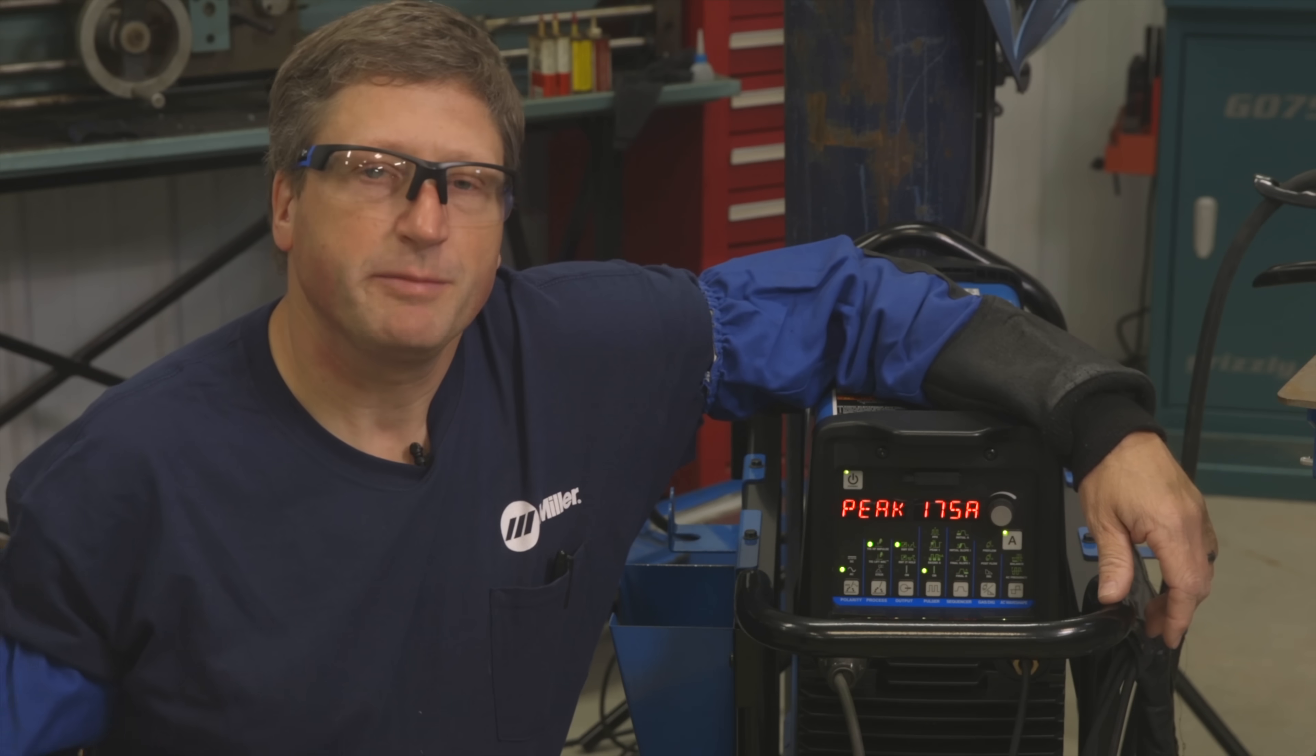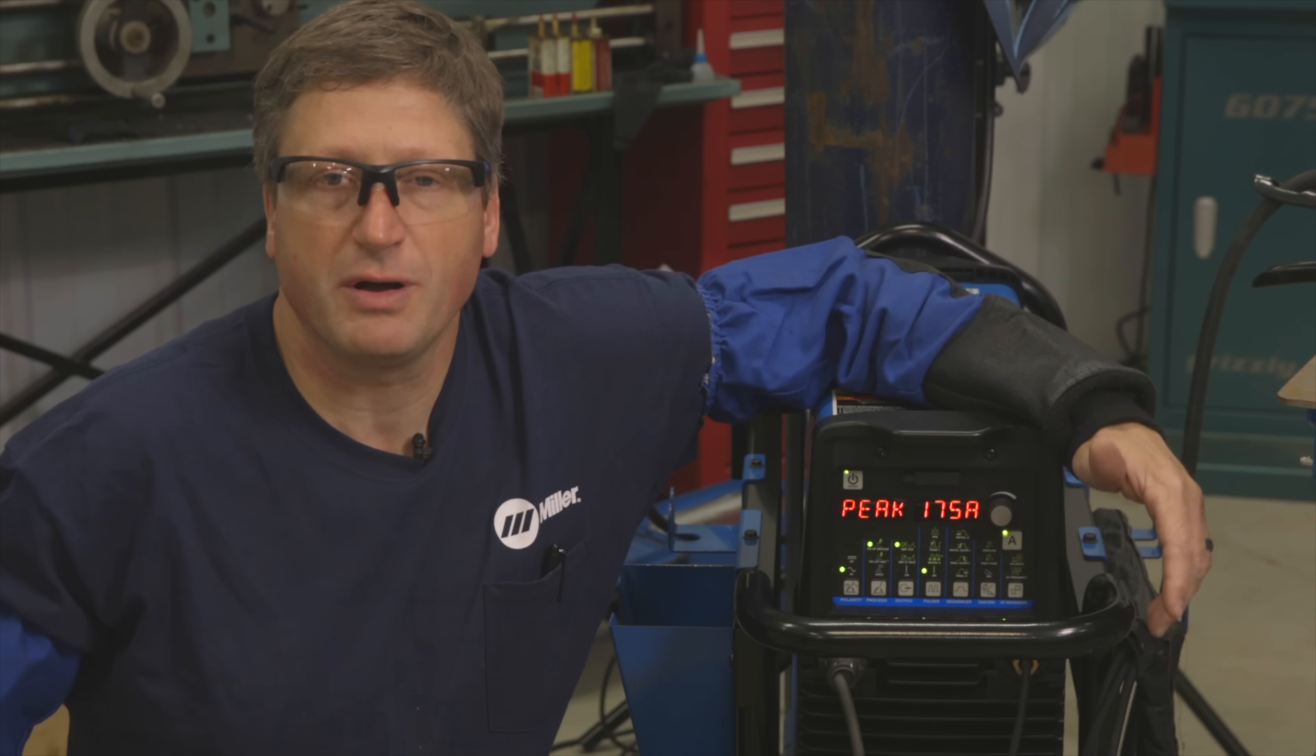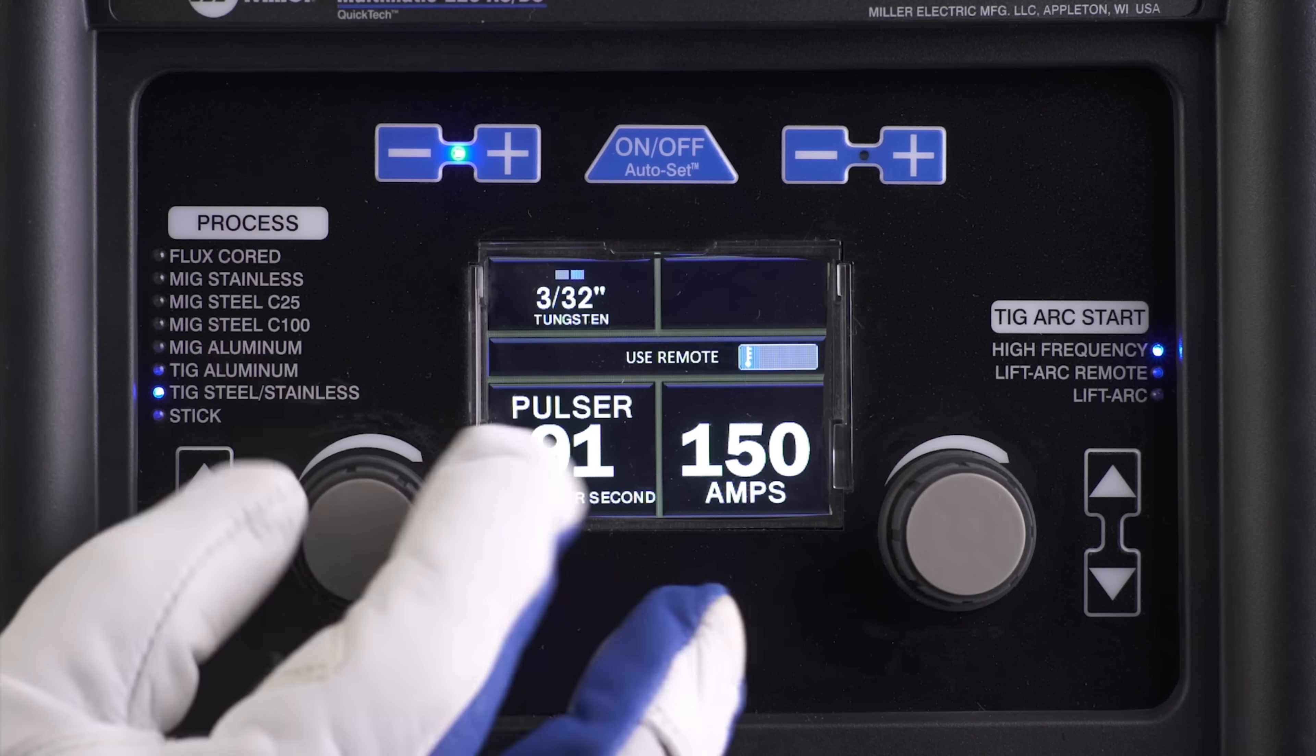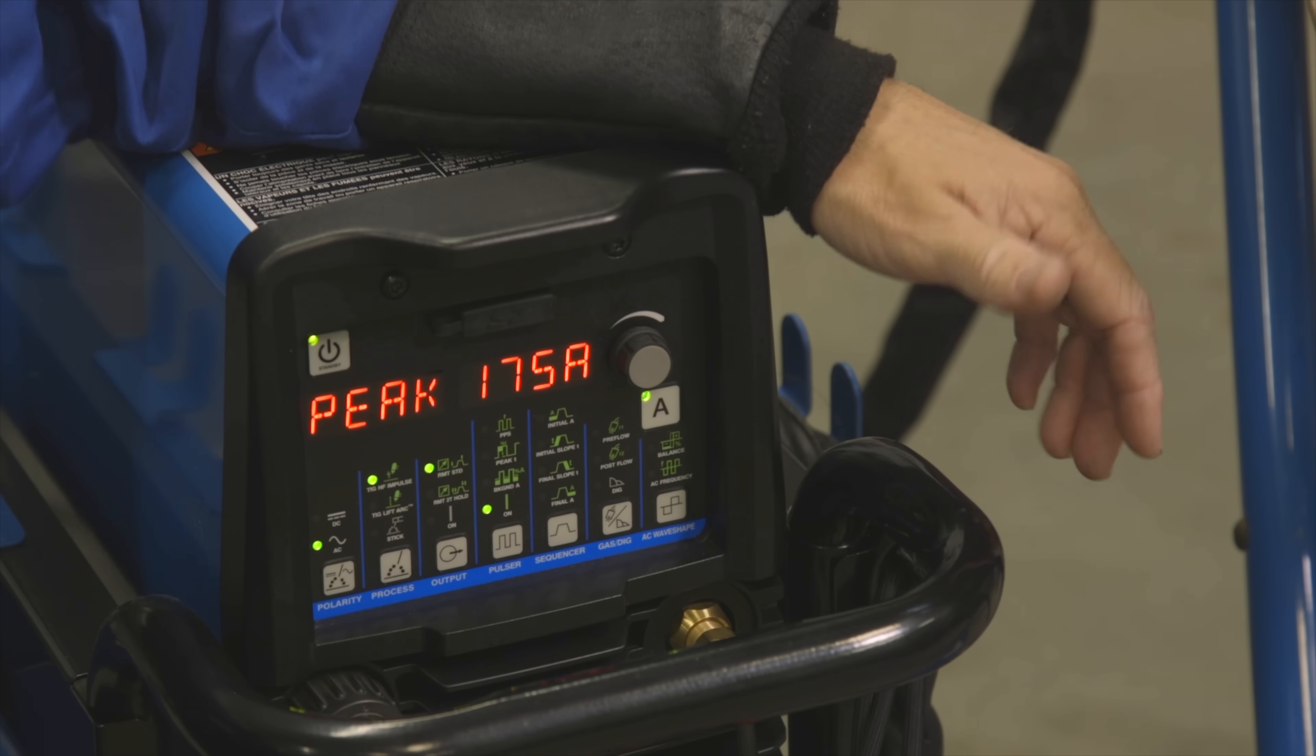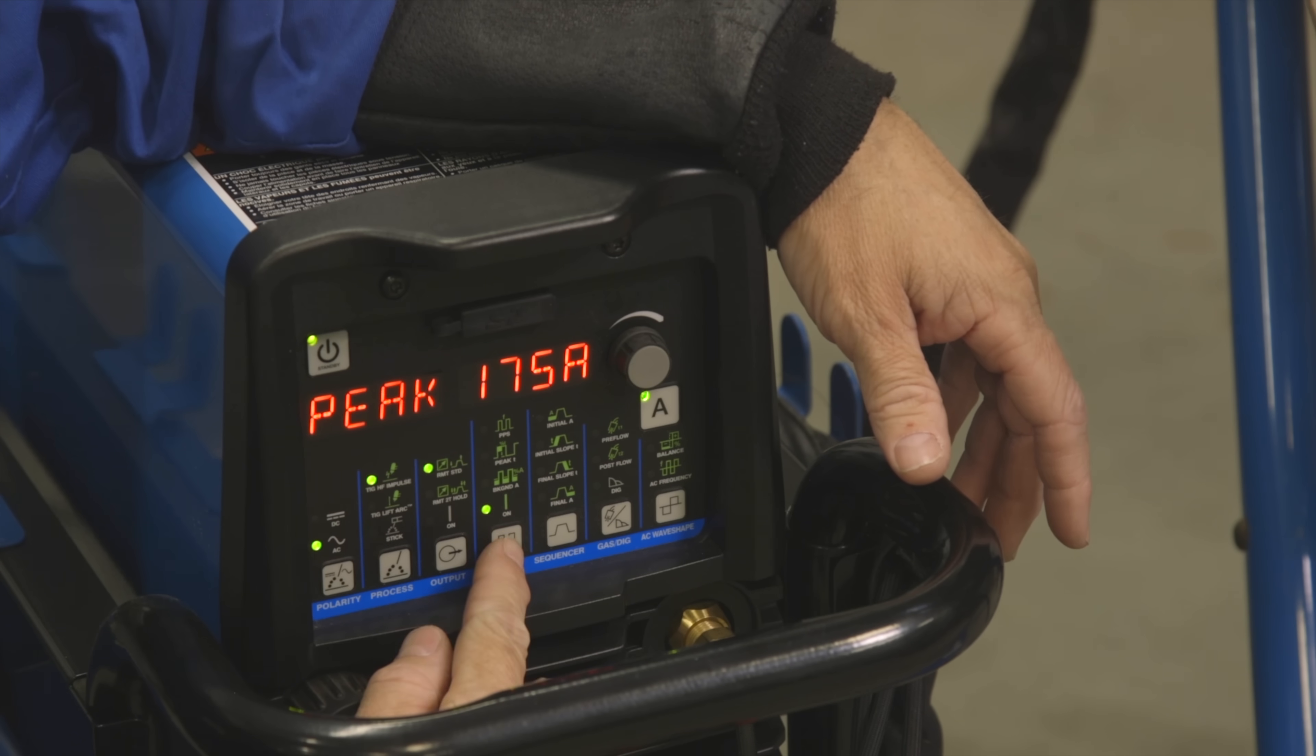For this exercise I'm going to be using the Dynasty 280. The Dynasty 280 has the ability to change all those four pulse parameters that we spoke about earlier. If you're working on a lower end machine that has pulse capabilities it may not have all those adjustments. They may preset some of those at the factory so you may only have control over your peak amperage and maybe your pulses per second. They might not give you the background settings or the peak time settings.